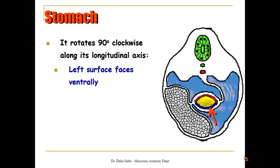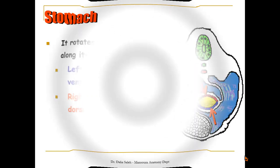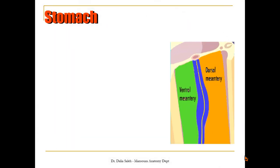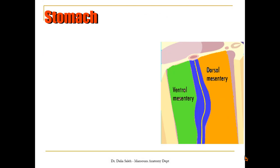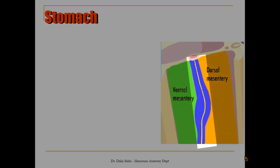The stomach begins to rotate along its longitudinal axis in a clockwise direction. This results in the left surface now facing ventrally, and the right surface now facing dorsally.